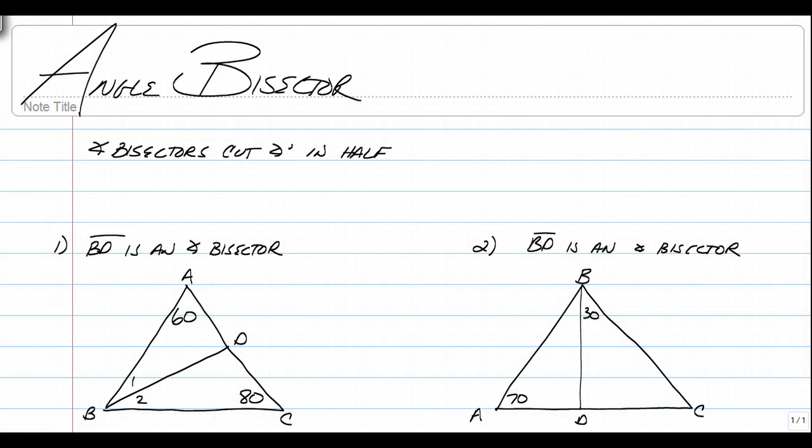Let's talk about angle bisectors, but this time in a triangle. Angle bisectors still cut an angle in half, so that hasn't changed.